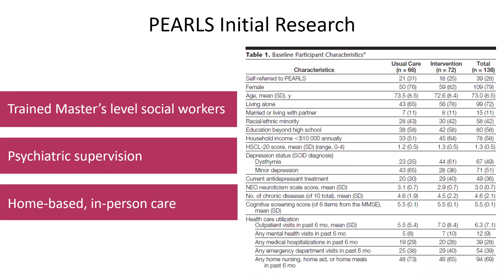42% identified as a person of color, including 36% Black, 4% Asian, 1% Latino, and 1% indigenous. 79% were female, with an average age of 73, and about three quarters lived alone. 58% had less than a $10,000 household income and all were experiencing poverty. 42% had a high school education or less, and all were English-speaking older adults.